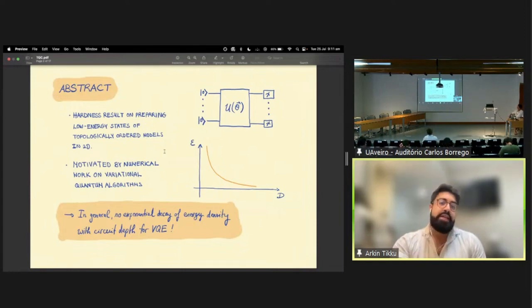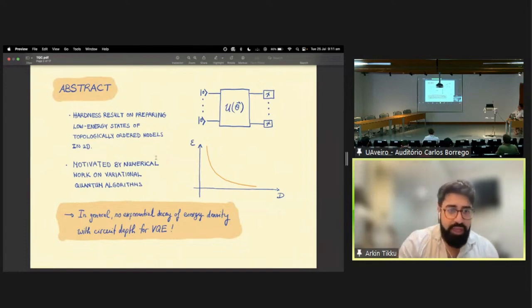We were focusing on variational quantum algorithms, which are algorithms geared towards near-term devices trying to make near-term devices useful for tasks like ground state preparation or ground energy estimation. One of the key corollaries of our results is that in general for methods like these, one cannot expect exponentially fast convergence to solution.